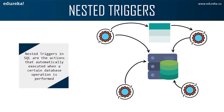You might be wondering in which scenario we can use a nested trigger. Let me share a scenario to help you understand. Continuing from the earlier scenario — Anna sent an email for every new customer added to the company's database. Now, what if she wishes to keep track of the number of customers to whom the email was sent? Anna needs to create a nested trigger to keep track of the count along with sending an email.